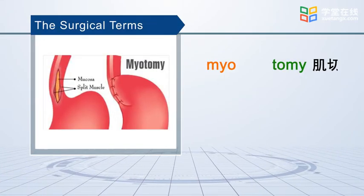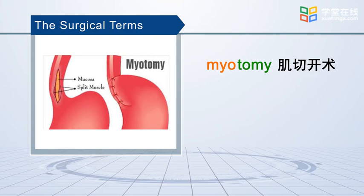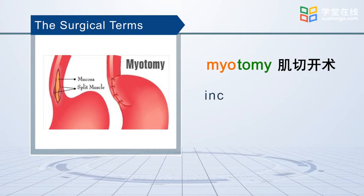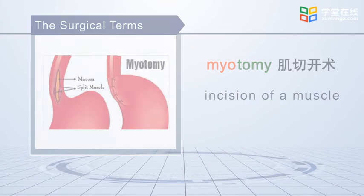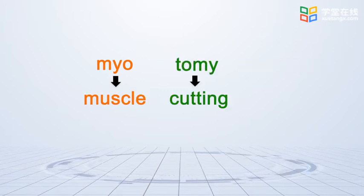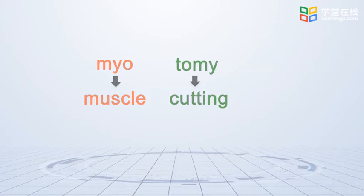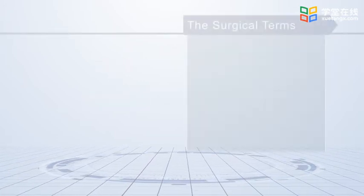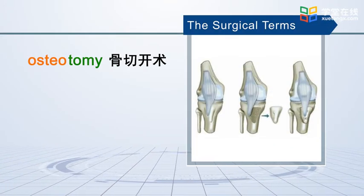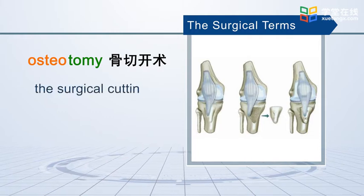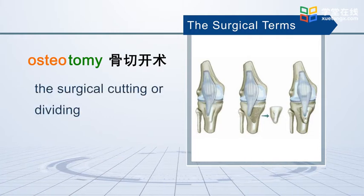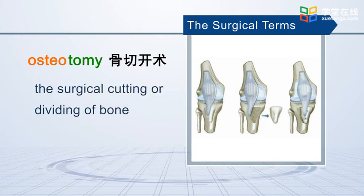Myotomy means incision of a muscle. Osteotomy means the surgical cutting or dividing of bone.